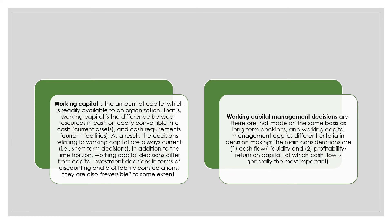Working capital is the amount of capital which is readily available for an organization. That is, working capital is the difference between resources in cash or readily convertible into cash — the current assets — and the cash requirements, also known as current liabilities. As a result, decisions relating to working capital are always current. Working capital decisions differ from capital investment decisions in terms of discounting and profitability consideration, and they are also reversible to some extent. Working capital management applies different criteria in decision-making. The main considerations are cash flow, liquidity, and profitability or return on capital, with cash flow generally being the most important.